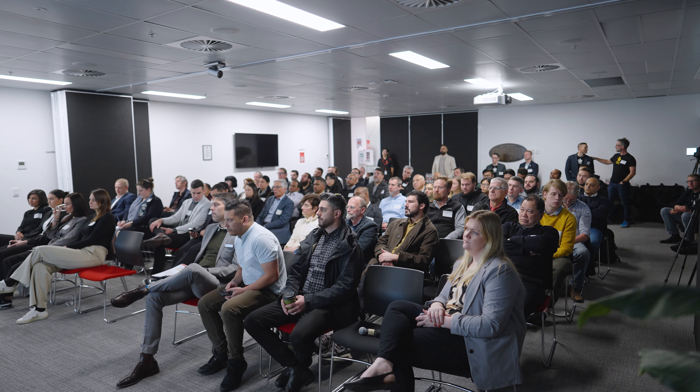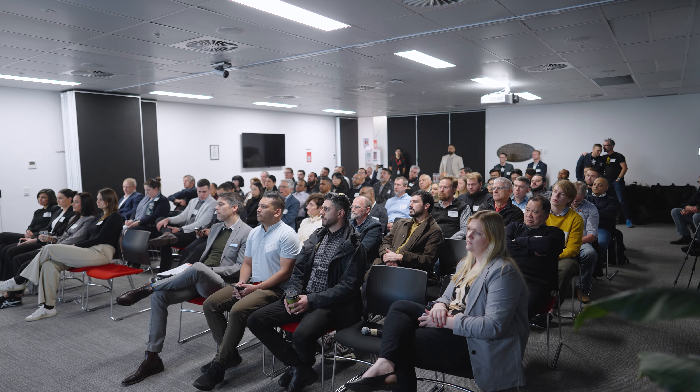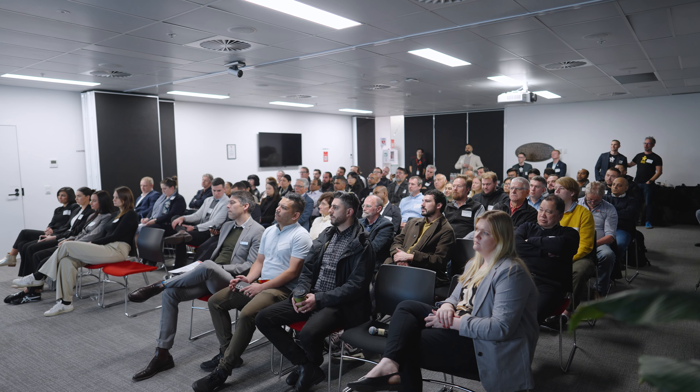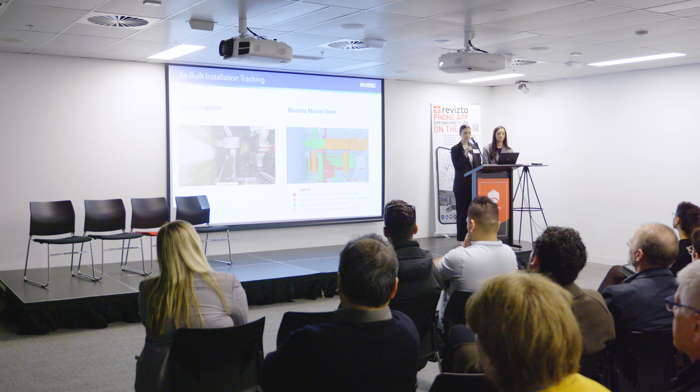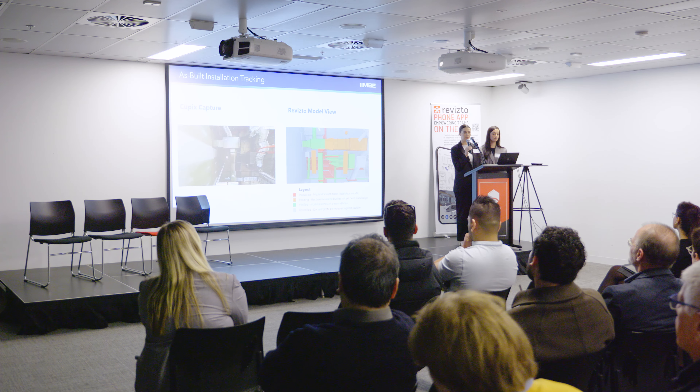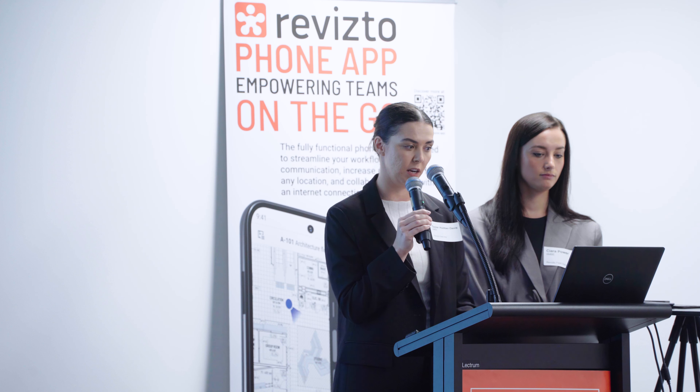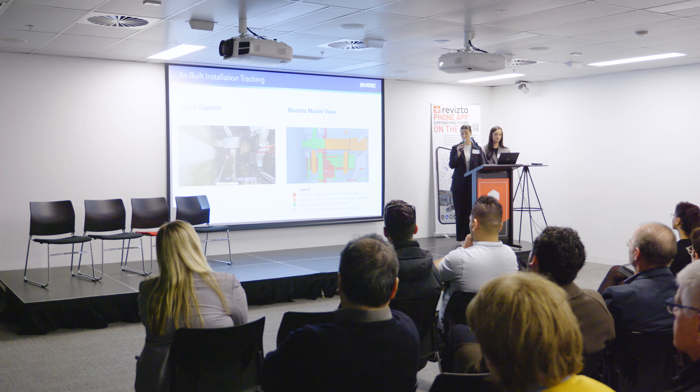One of the ways to track what we're looking at, so we're not reviewing the same things over and over again, is colour coding — using custom properties within Revisto so you don't have to go directly into the models to add these properties. If they're not there already, you can bulk add them into the models contained within Revisto and then apply an appearance template, very similar to what's shown here, like a traffic light system.